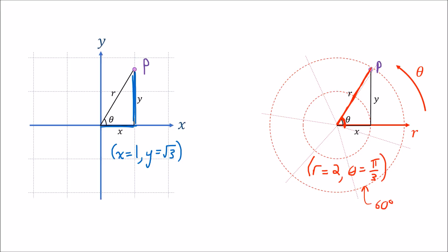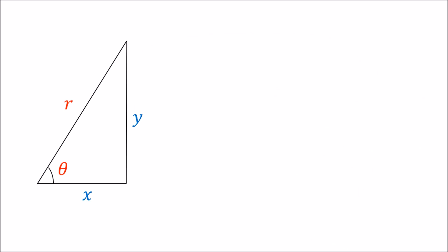So we know how to measure points in each coordinate system using the coordinate lines as measuring sticks. But consider this problem: given a point with known polar coordinates, how can we get the corresponding Cartesian coordinates? Well, the answer is to use this triangle again. This triangle illustrates the relationships between x, y, r, and theta.